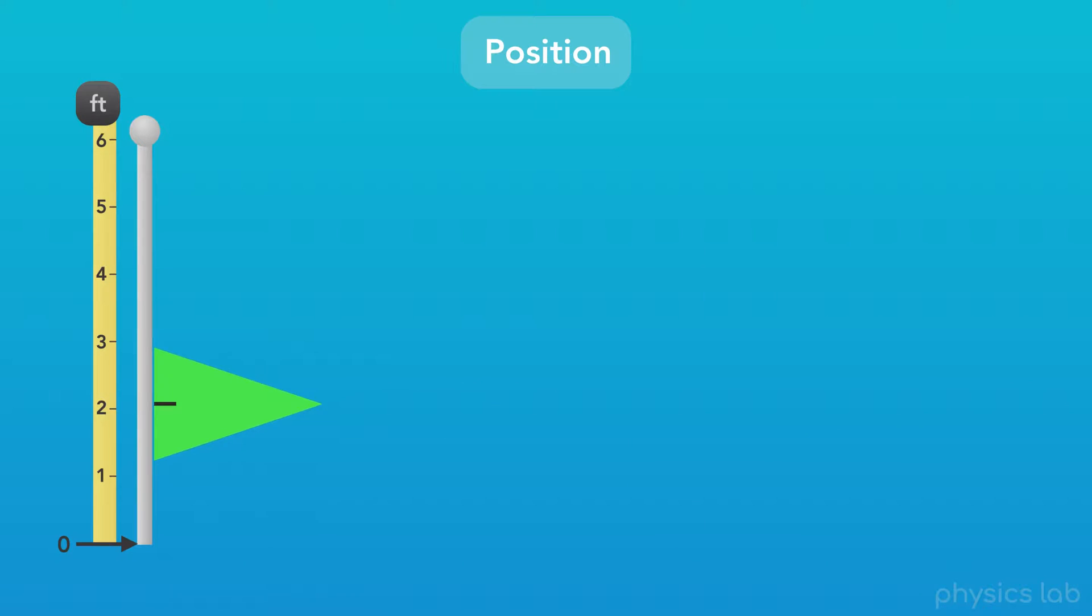Now, since the flag can only move up or down this flagpole in a straight line, we're measuring position along one dimension. We can describe the position of this flag by using only a single number, like four feet. One dimensional motion, or linear motion, is what we'll be learning first.